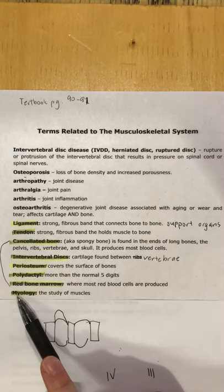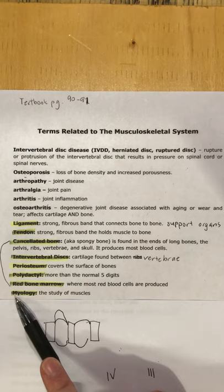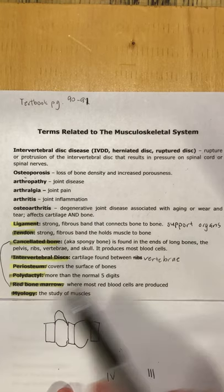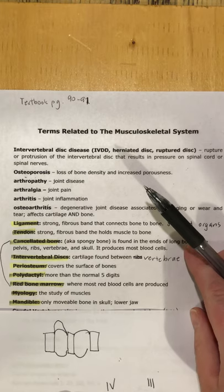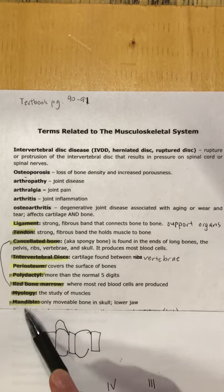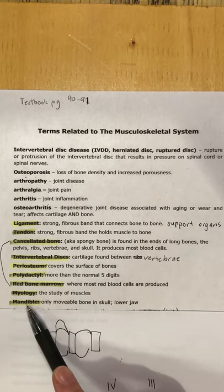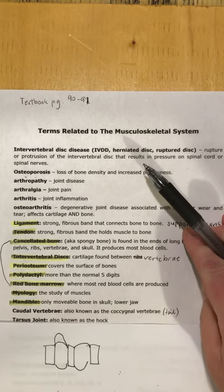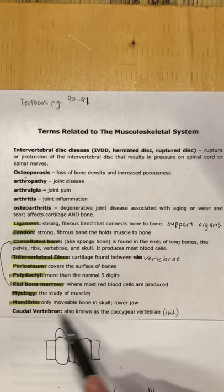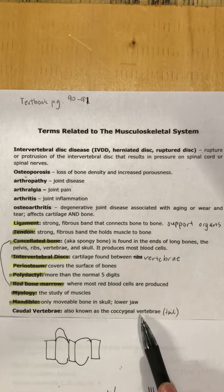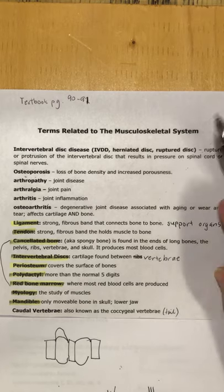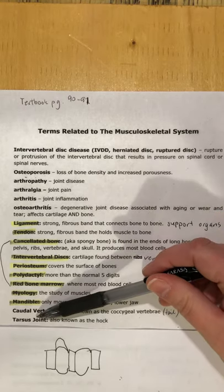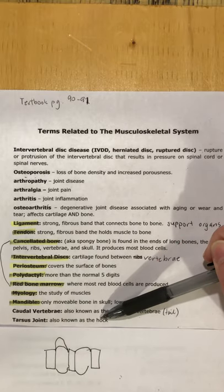Myology: 'my' is muscle, '-ology' is the study of — so myology is the study of muscles. The mandible is the only movable bone in the skull and makes up the lower jaw. The caudal vertebrae are also known as the coccygeal vertebrae — that's what makes up the tail. The tarsus joint is also known as the hock.